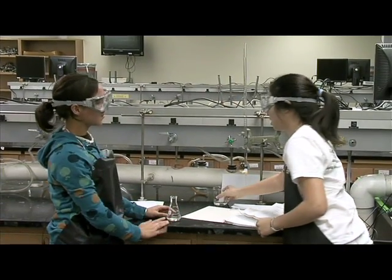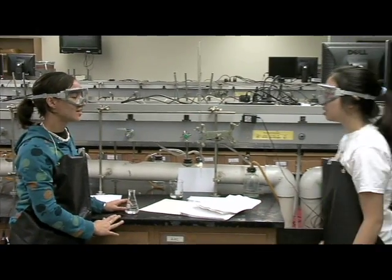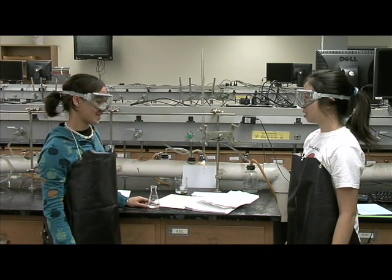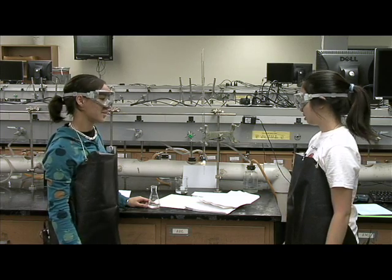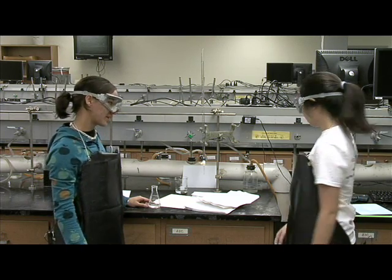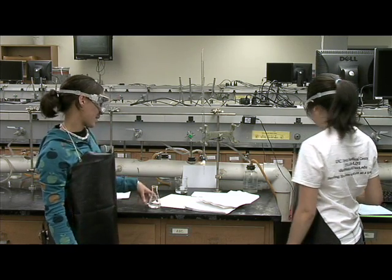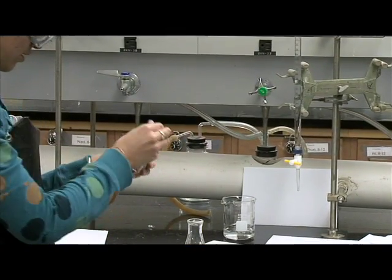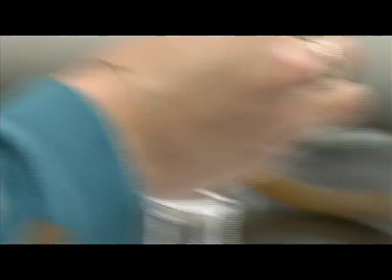Could you pass me the phenolphthalein? The phenol what? The phenolphthalein. It's the indicator, the purplish pink stuff. It's what tells us when the titration has reached the endpoint, which is when all the titration is complete and it changes the color to pink. Okay, here you go. Thanks! A couple drops. That should do it.